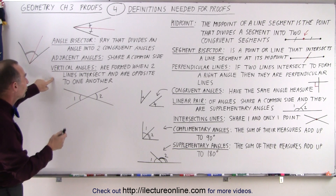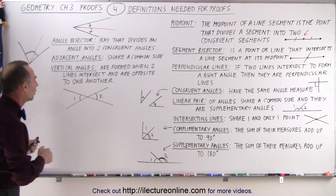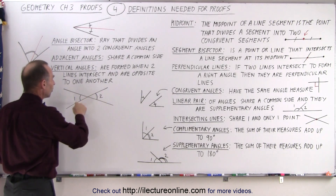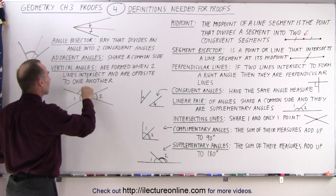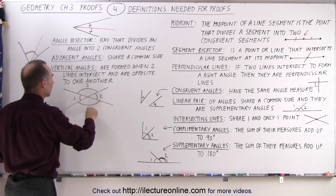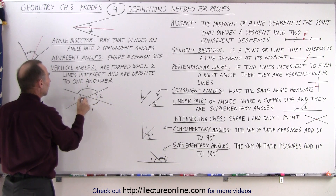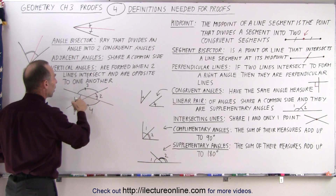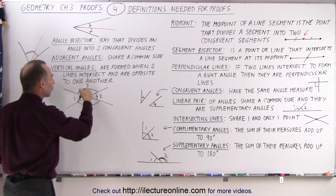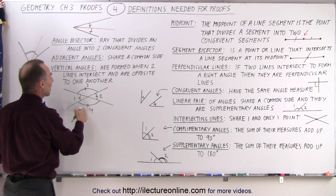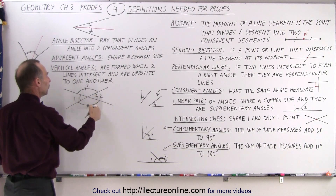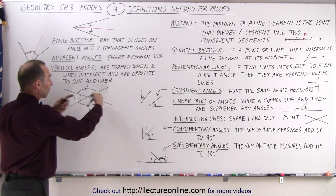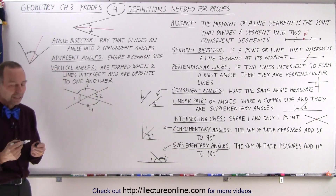Vertical angles are formed when two lines intersect, and the angles are opposite to one another. Here we have two lines that intersect — let's say here we have angle 3 and there we have angle 4. Notice that angle 1 is equal to angle 2, and angle 3 is equal to angle 4. Angle 1 and angle 2 are vertical angles; angle 3 and angle 4 are vertical angles. Angles 2 and 3 are adjacent, angles 1 and 4 are adjacent, and 1 and 3 are adjacent, as are 2 and 4. But the ones that are opposite to one another are called vertical angles.